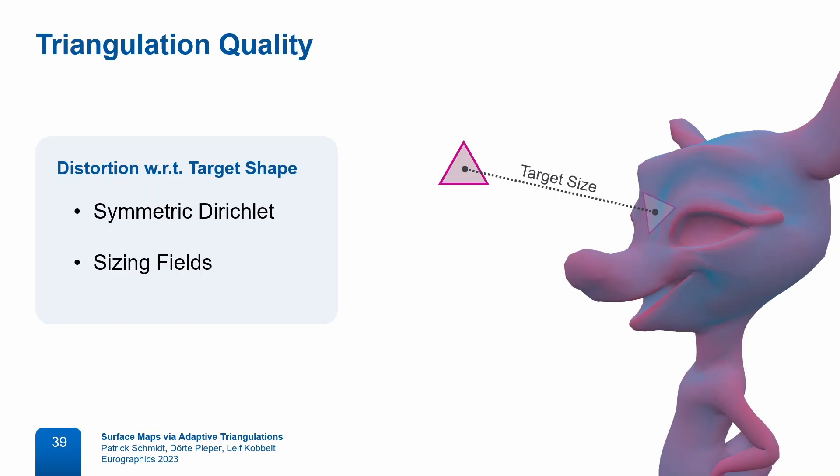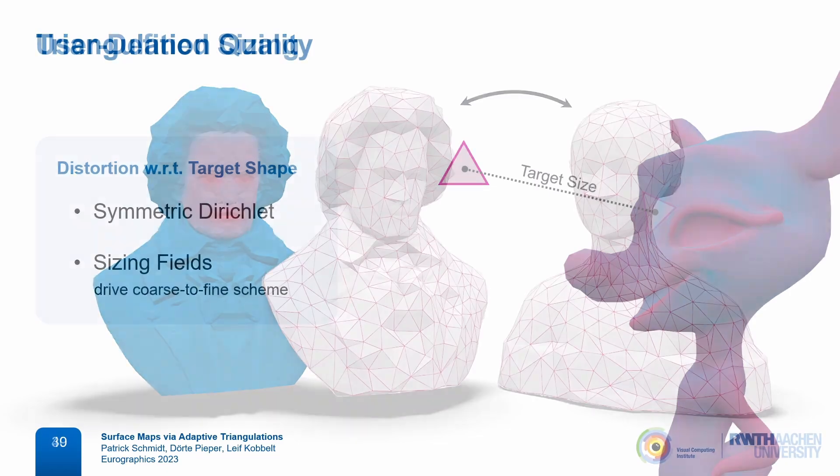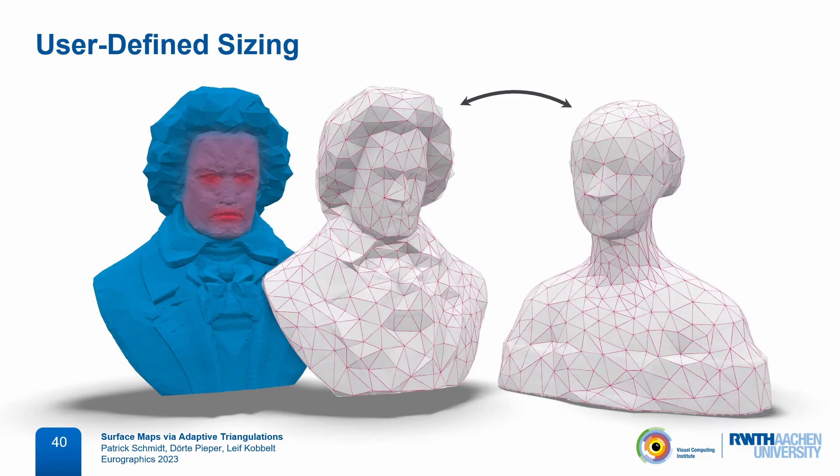By default, we compute our sizing fields based on local curvature so that we get finer resolutions in regions of high curvature. The overall scale of these fields is a parameter and we use it to drive our coarse-to-fine optimization schedule. Alternatively, we can also take user-defined sizing fields as input.